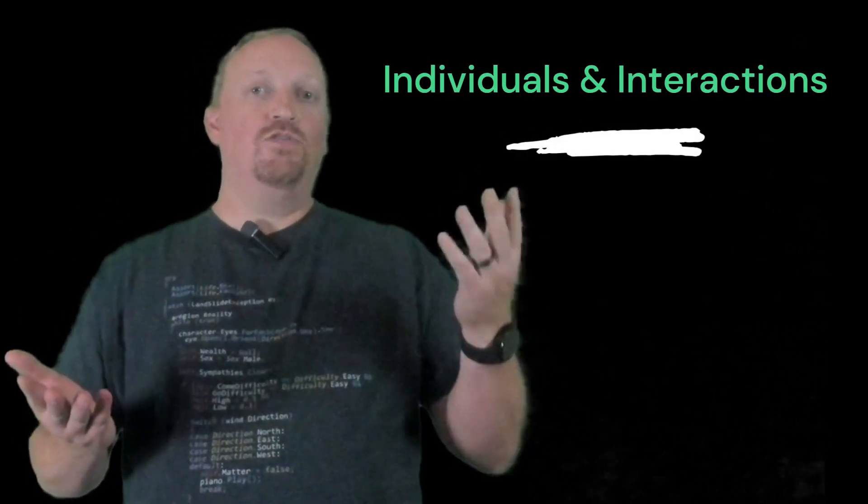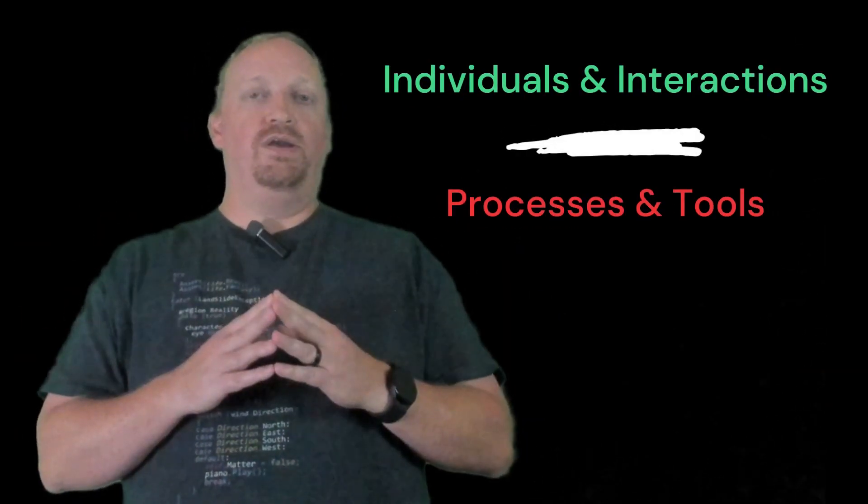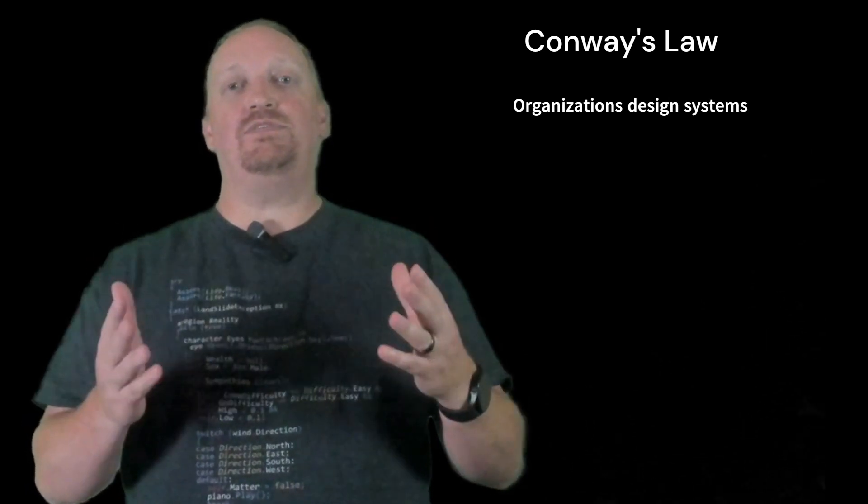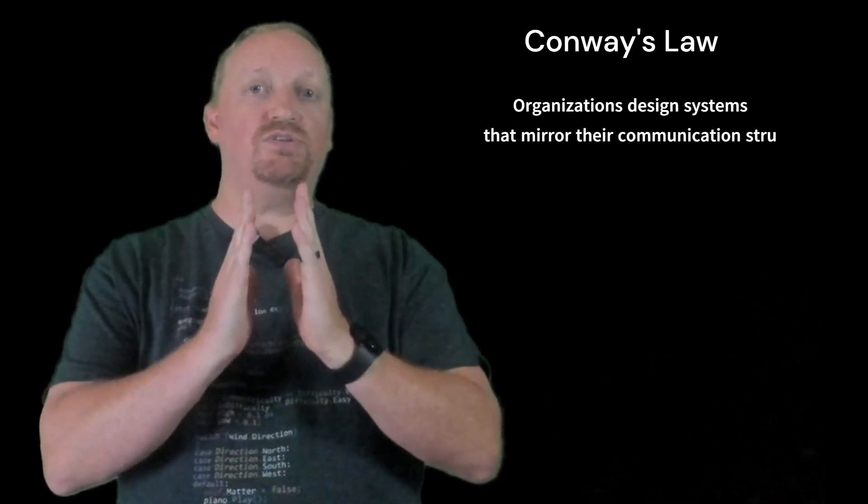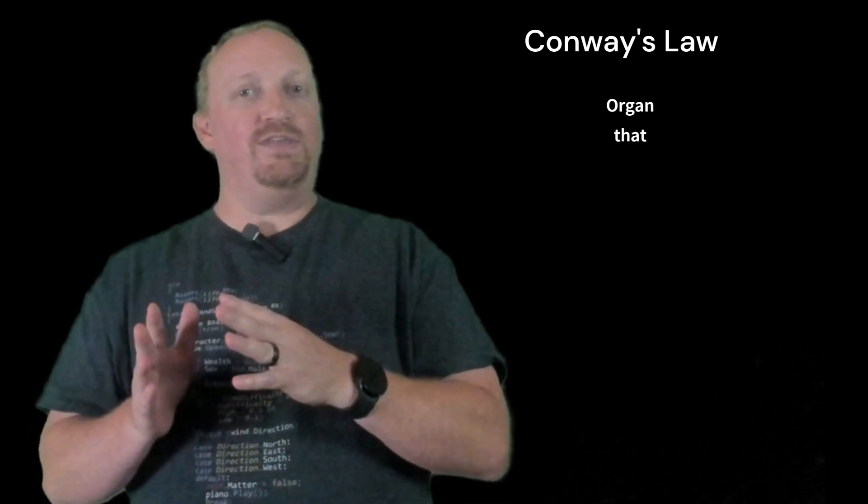So let's go ahead and take a moment to go over the four values and the 12 principles of agile software development. The first value of agile is individuals and interactions over processes and tools. This value flows from a law of business called Conway's Law, which states that organizations design their systems in a way that mirrors their communication structure. So it's important to have good communication between the individuals working on the software so that the various parts of the system also work well together.